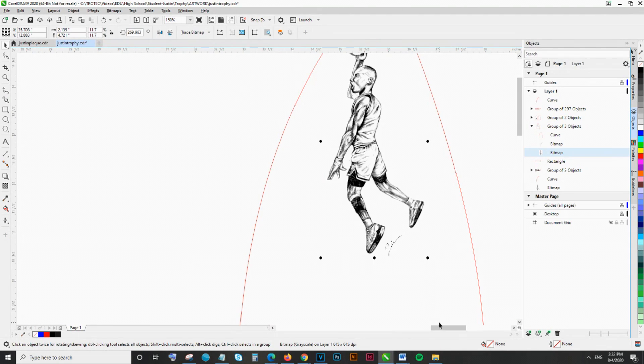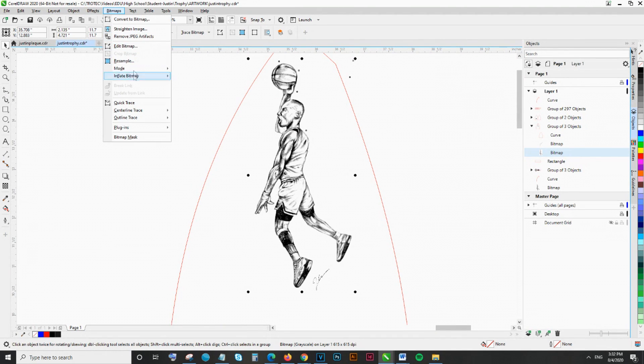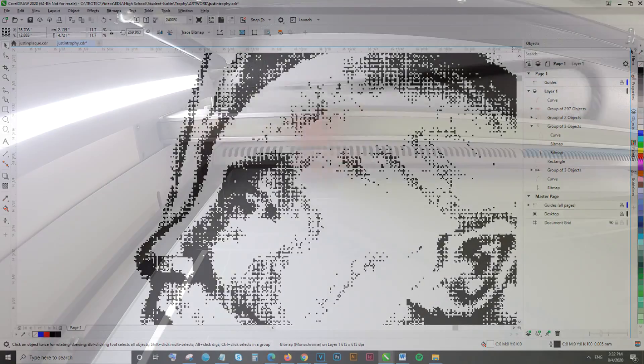I converted the file into a vector, added text and a few more graphics and the cut lines for the shape of the trophy. I engraved my files on Trotec Glass Clear Acrylic.